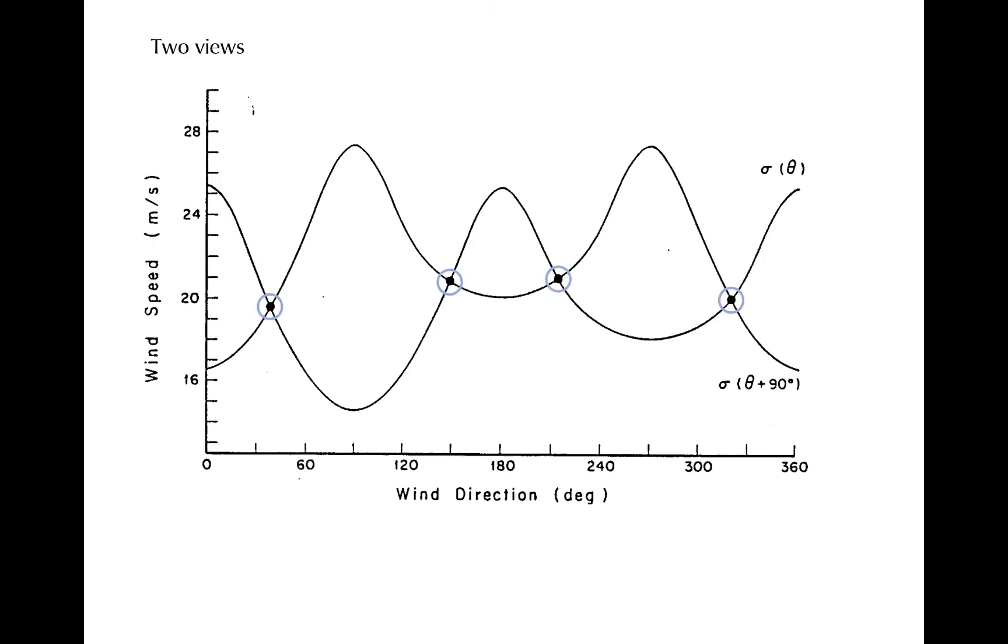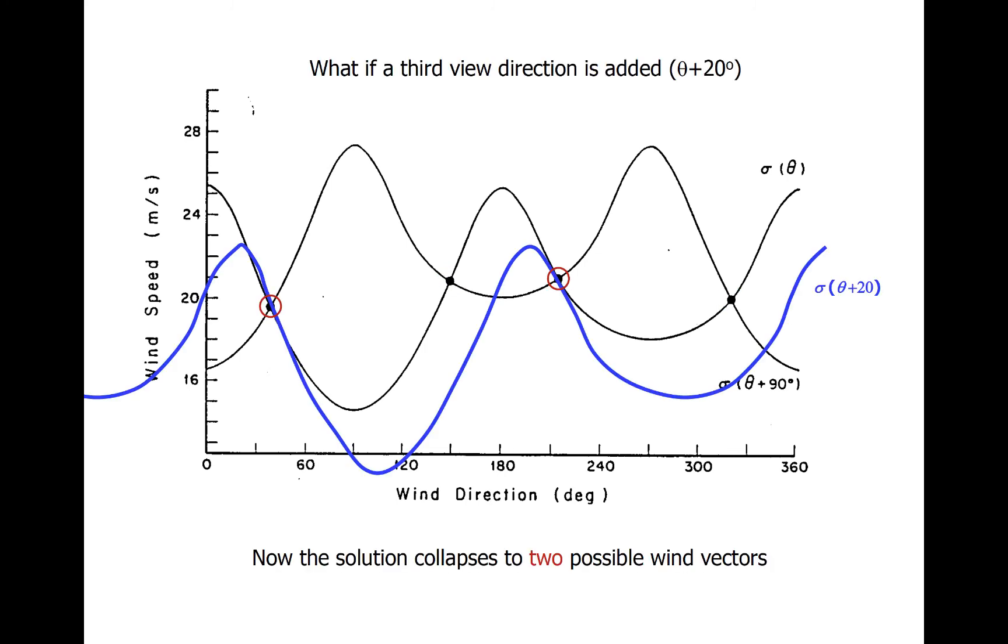If we add a second view, then the only possible solutions are where the two curves intersect. So this might be viewed at an angle that's 90 degrees different from the original view angle. Those two lines only intersect now in four locations, greatly reducing the ambiguity. By adding a third or even fourth view, we further reduce the ambiguity and close in on a solution. Many scatterometers only use two or three view angles and rely on observations and model analysis to discard one or two of the possible solutions.